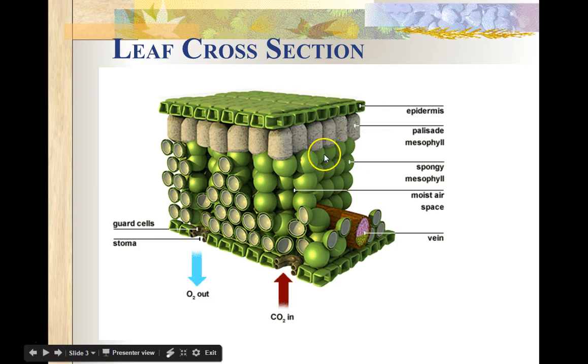Just inside that are spongy mesophyll cells. Again, there's lots of chloroplasts located in these, but you're going to find that there's gaps in between here. So these gaps in between the spongy mesophyll are important because it helps transport those important gases.